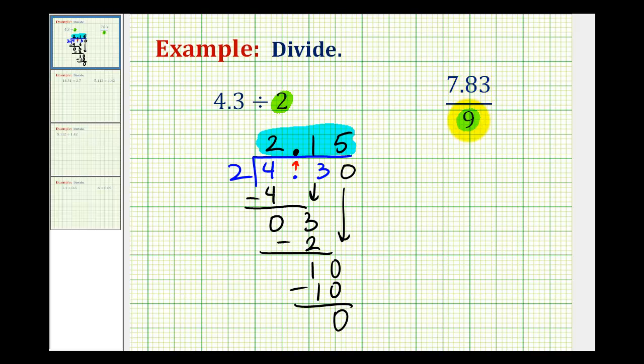Our second example is written in fraction form, but a fraction bar does represent division. So we'll set this up in the same way. We have 7.83 divided by 9. And again, as long as we're dividing by a whole number, we just need to move the decimal point up into our quotient, and then we can divide as we normally would, disregarding the decimal.